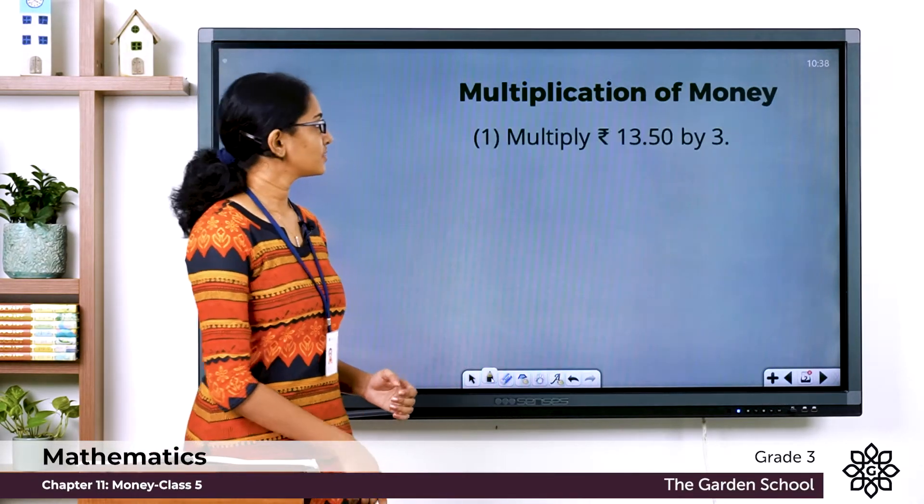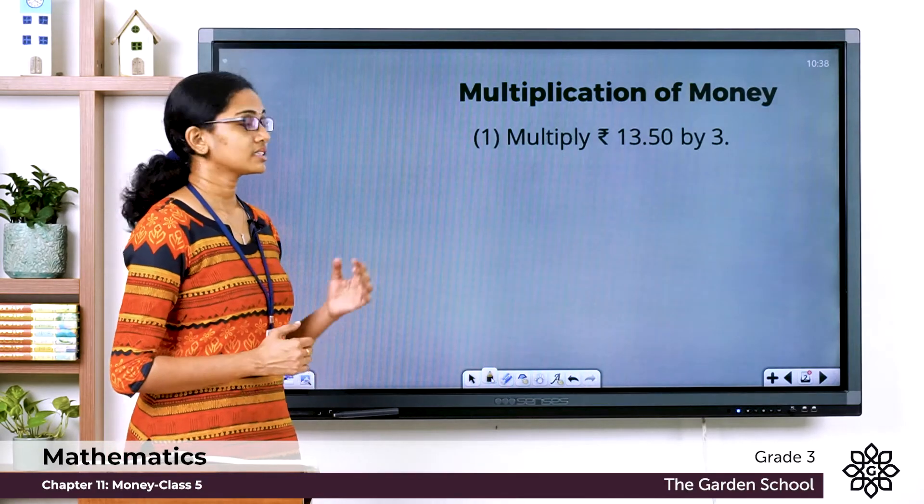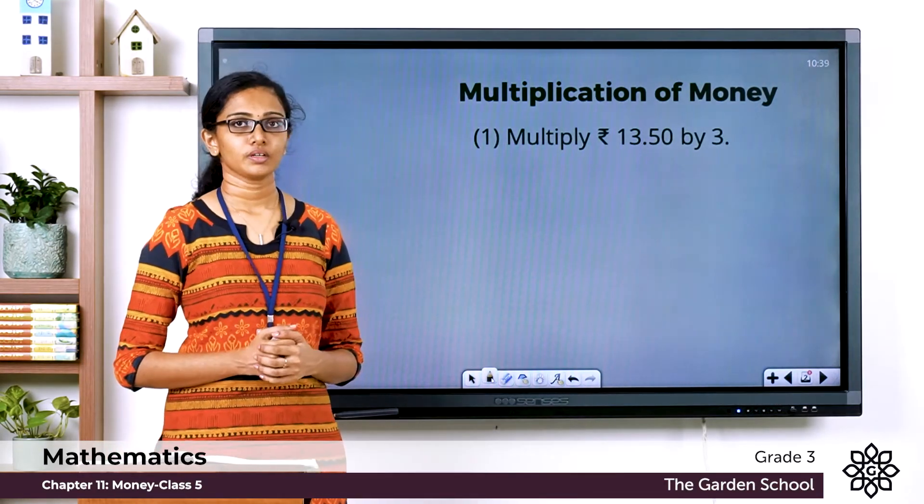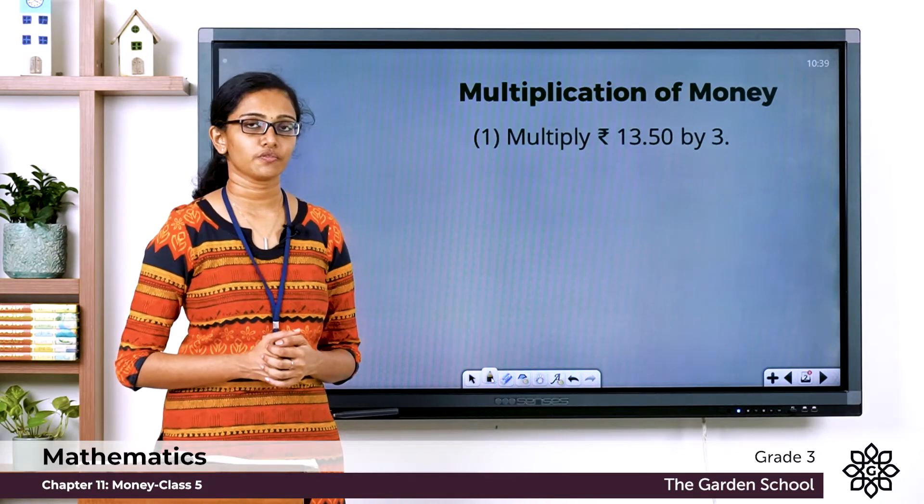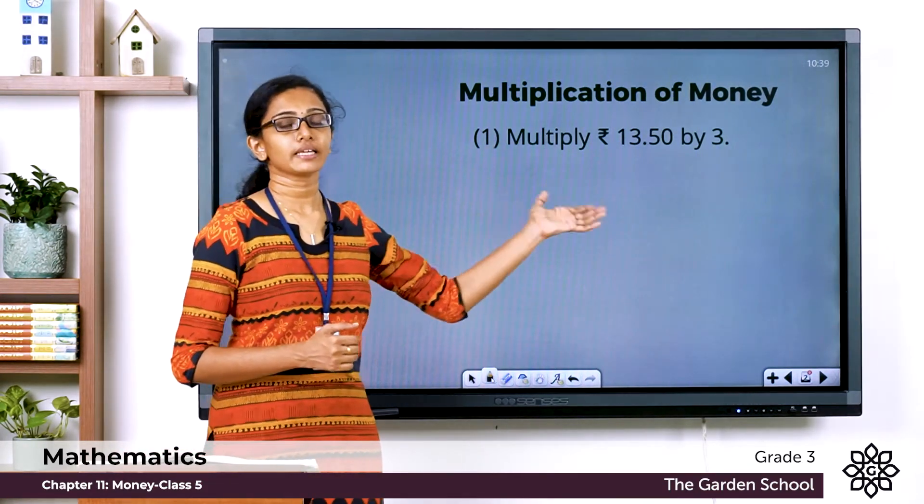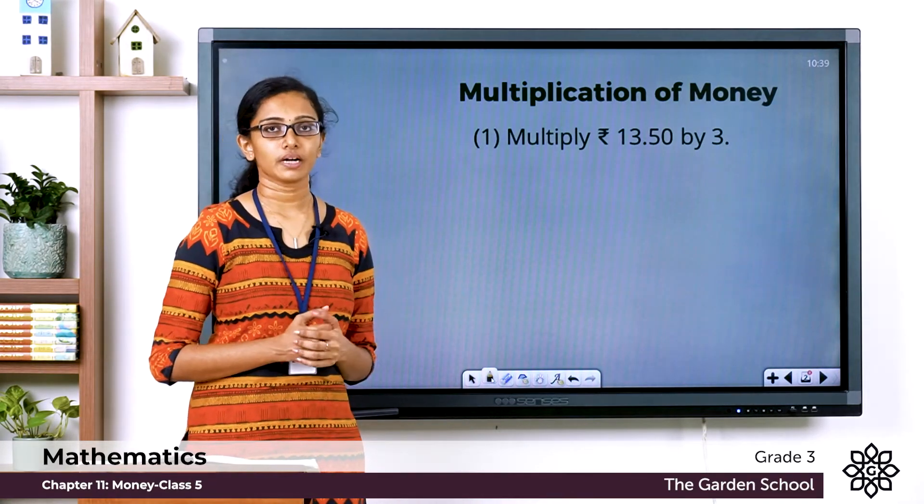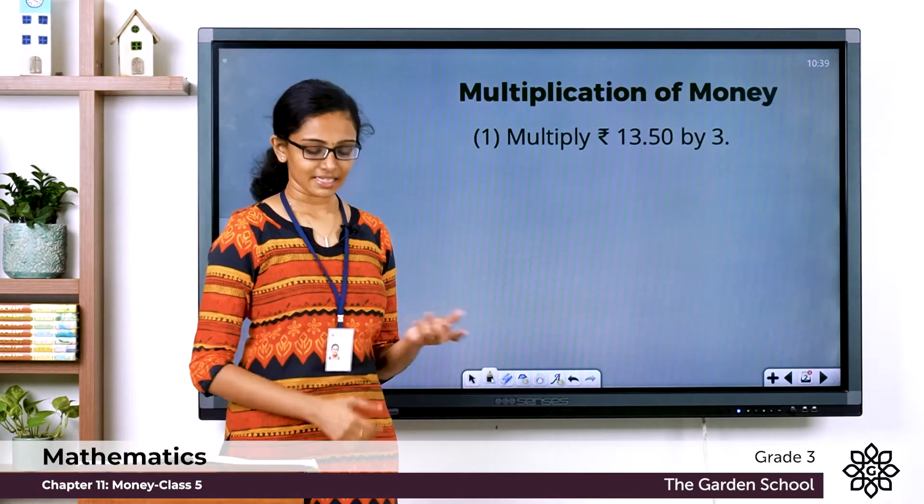Let's do one question now. Multiply 13 rupees 50 paisae by 3. While doing multiplication of money you have to start multiplying the paisae first. Then you proceed with the multiplication of the rupee part. Let's see the steps.